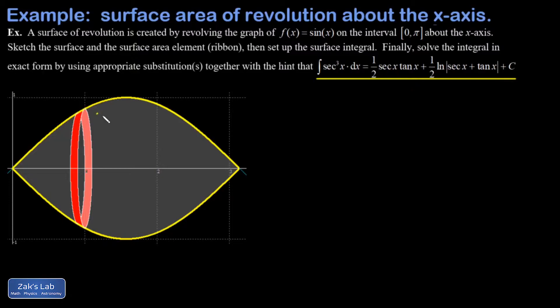You can see in the picture I've already drawn an increment of area into the surface, and that's a thin ribbon with a width given by a small increment of arc called ds. The ribbon is located at a position of x, which means the radius of this thing is given by the height of the function corresponding to x. In other words, the radius is sin x.